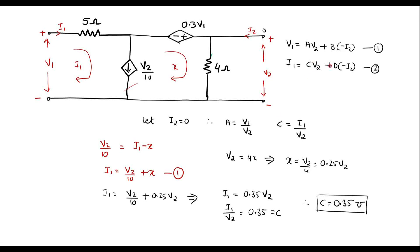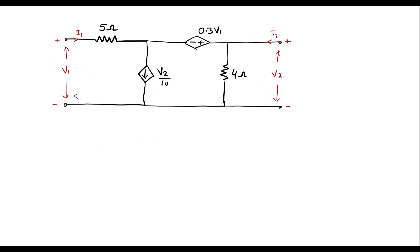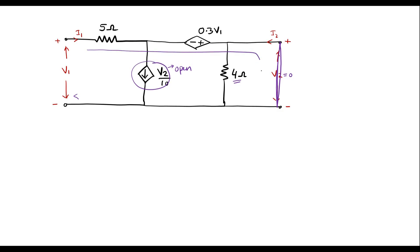To find parameters B and D, set V2 = 0, which short-circuits the output port. With V2 = 0, the current through the 4 ohm resistor becomes zero (equivalent to removing it), and the voltage-dependent current source becomes open. This leaves only a single loop with current I1 flowing. Since I2 flows in the opposite direction to I1, we have I1 = −I2.